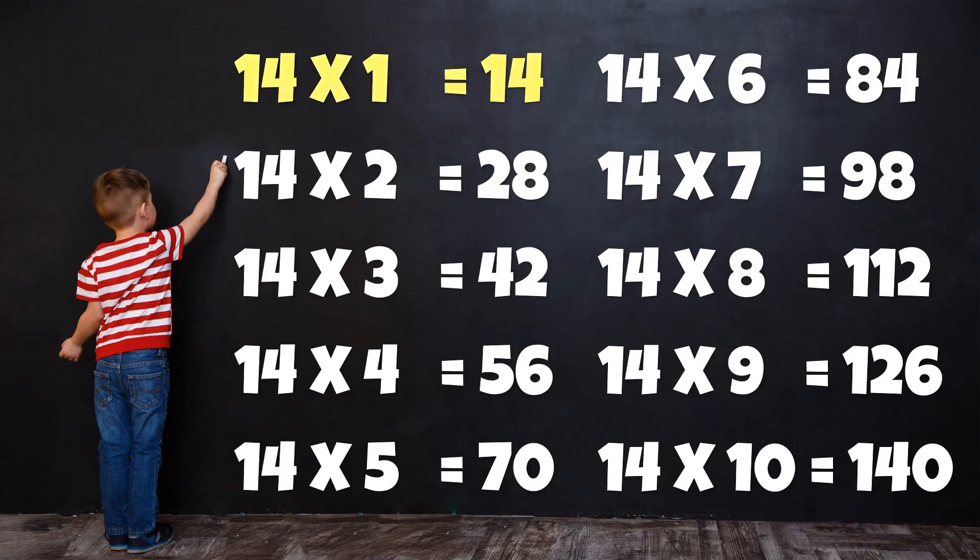Table of 14: 14 1s are 14, 14 2s are 28, 14 3s are 42, 14 4s are 56, 14 5s are 70, 14 6s are 84, 14 7s are 98.